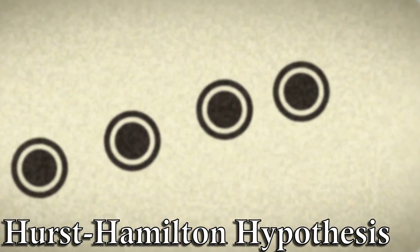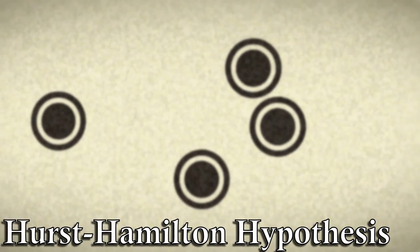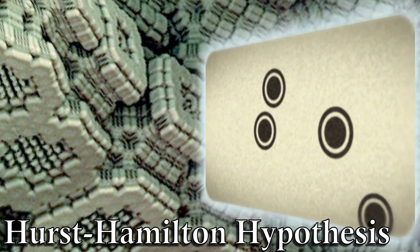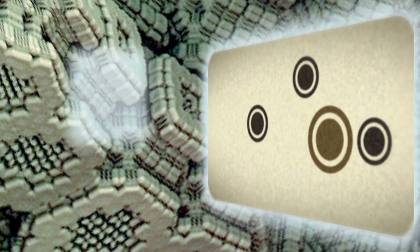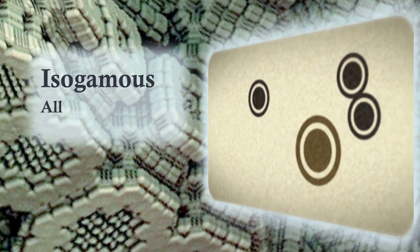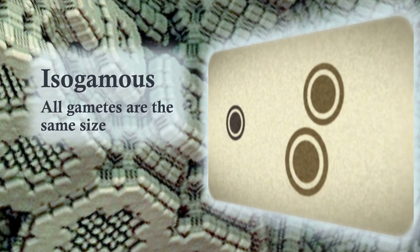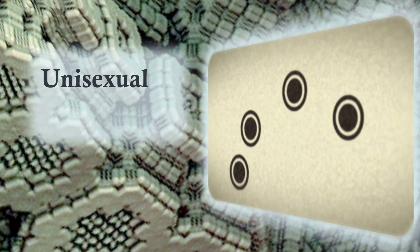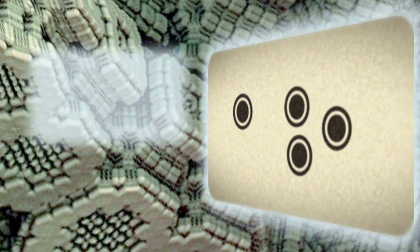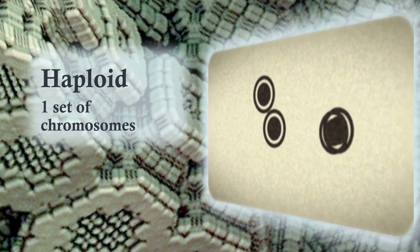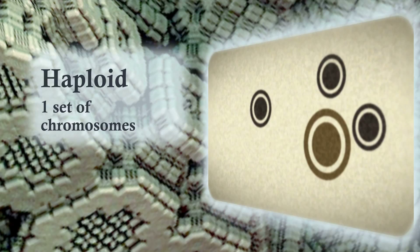So let's put that theory aside and move on to the one which I believe holds a lot more strength: the Hurst-Hamilton hypothesis. Much like the previous scenario, the ancestral state has isogamous unisexual gametes in which all gametes can fuse with all, in a haploid population. And like the previous scenario, sexes evolve as a means to resolve conflict — in this case, genetic conflict.